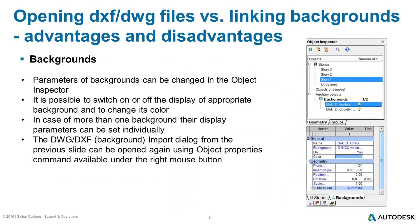To control these parameters of the imported background you can use the Object Inspector. The import dialog for a selected background can be invoked again to modify its original settings using the Object Properties command available under the right mouse button, in the same way as done for a panel, or by clicking on one of these lines in the inspector.